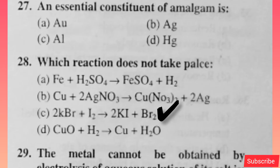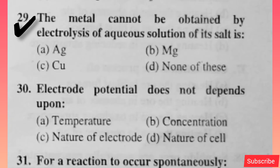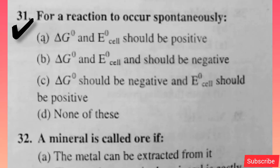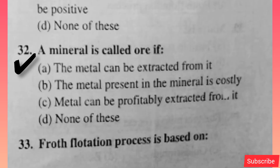Which reaction does not take place — option C is right. The metal cannot be obtained by electrolysis of aqueous solution of its salt is — option B is right. Electrode potential does not depend upon — option D is right. For a reaction to occur spontaneously — option C is right. A mineral is called ore if — option C is right.